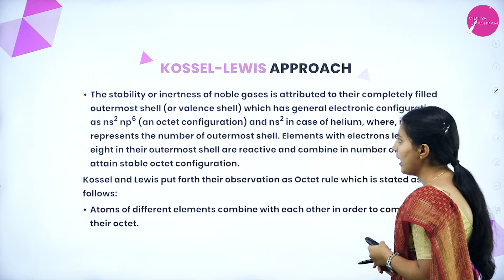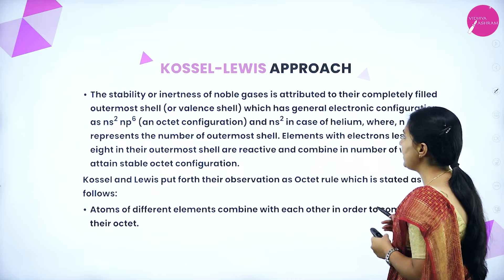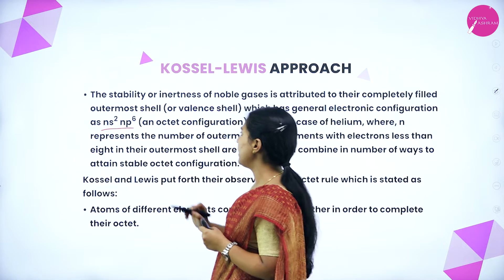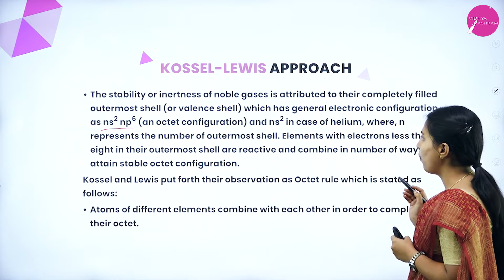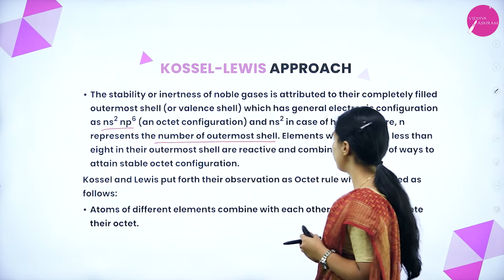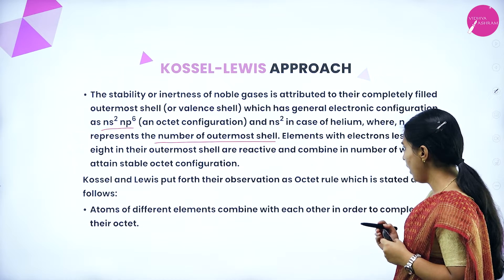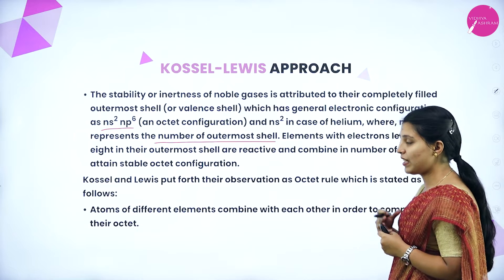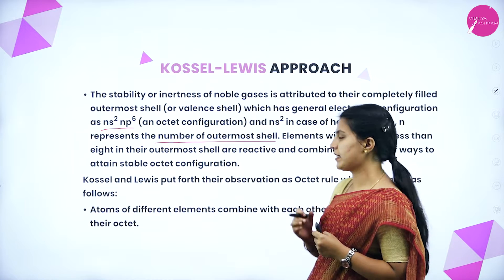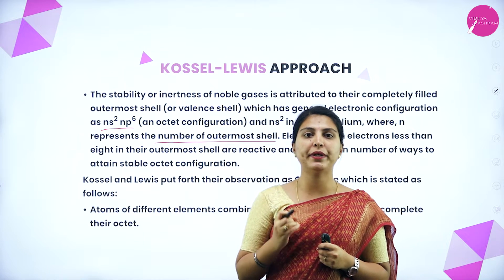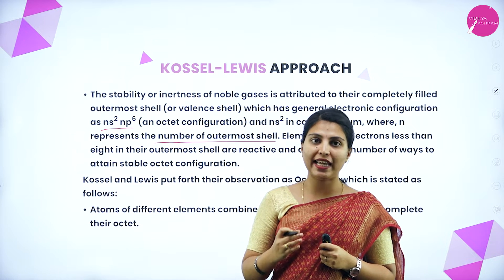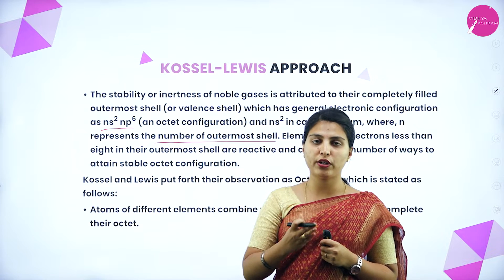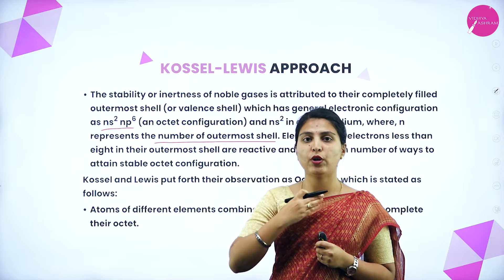The stability or inertness of noble gases is attributed to their completely filled outermost shell or valence shell, which has the general electronic configuration of ns² and np⁶ — that is an octet configuration — and ns² in case of helium, where n represents the number of the outermost shell. Elements with fewer than 8 electrons in their outermost shell are reactive and combine in a number of ways to attain stable octet configuration.